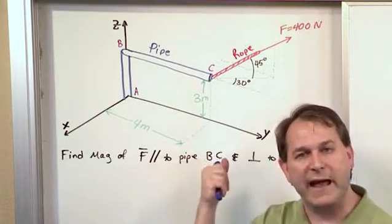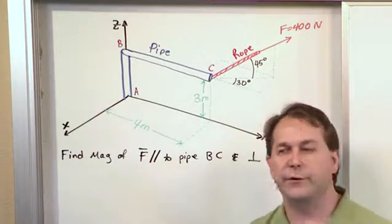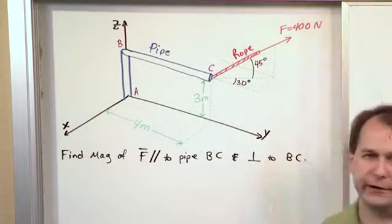And some of the force, because of the angle of the rope here, is going to be trying to pull it perpendicular. Those two together make up this oblique direction here.